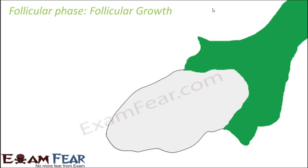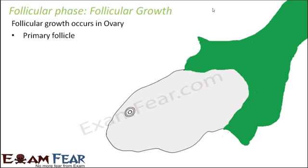What kind of growth happens in the follicular phase? Follicular growth occurs inside the ovary, starting from the primary follicle. This growth starts once the female reaches puberty and then keeps happening in every cycle, because the growth of the follicle is a part of egg formation. Every time ovulation has to take place, an egg has to be formed. For an egg to be released from the ovary, follicular growth must take place.